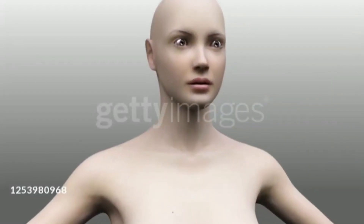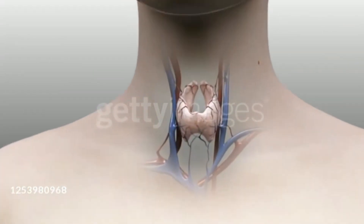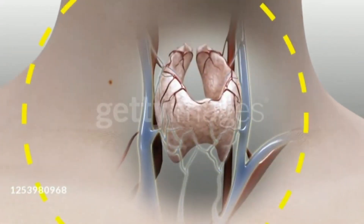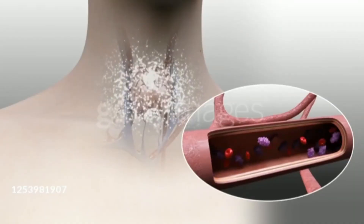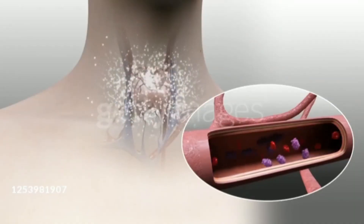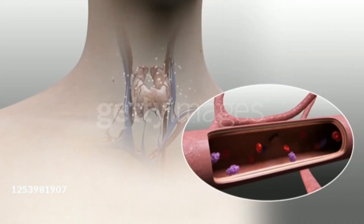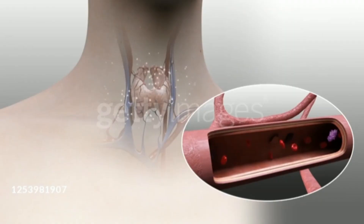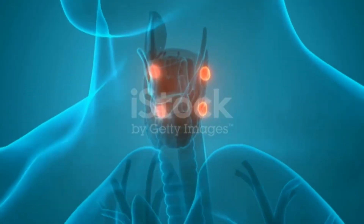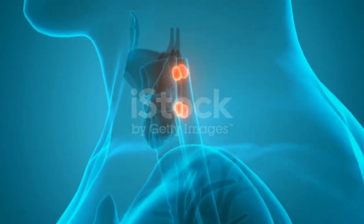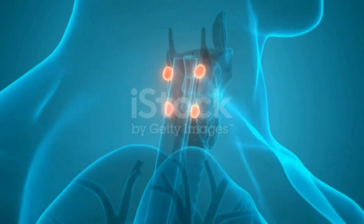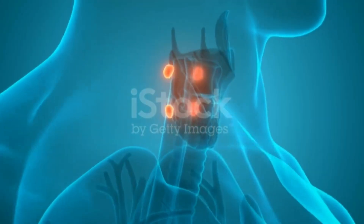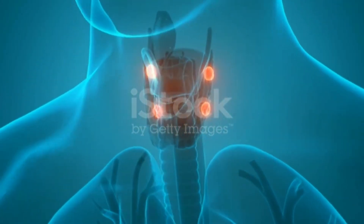Thyroid gland. The thyroid gland is a butterfly-shaped gland located at the base of the neck. It produces two hormones, thyroxine T4 and triiodothyronine T3, which are secreted into the blood. Both these hormones are necessary for the normal functioning of all your body's cells. The parathyroid glands are four small pearl-shaped glands located just behind the thyroid gland. These glands produce parathyroid hormone, which increases the level of calcium in the blood.